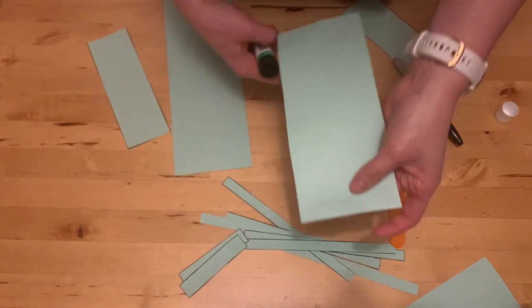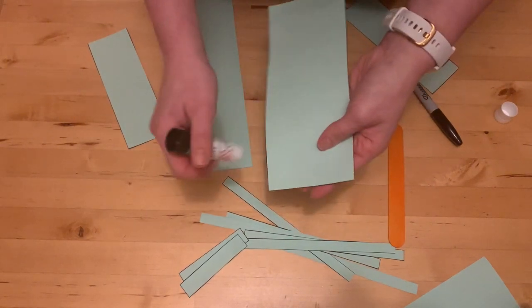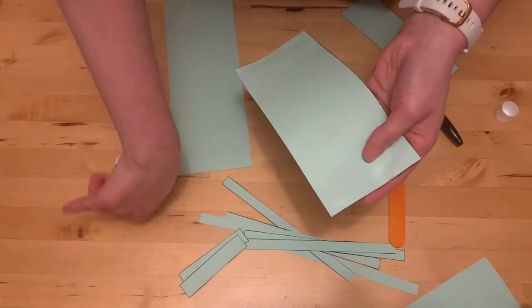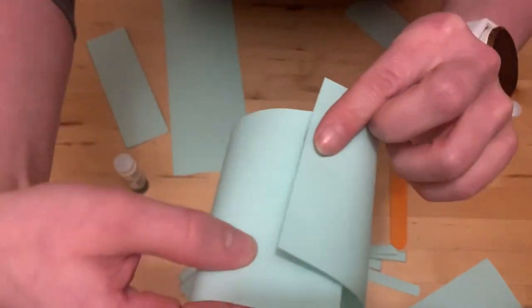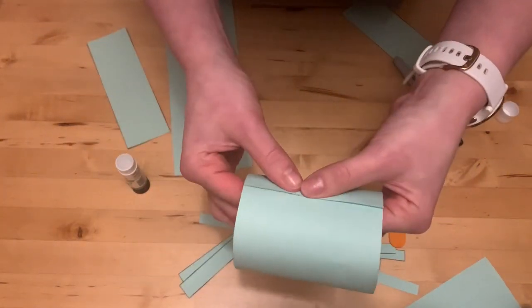So I'm putting my glue on here but also on what I'm sticking down to so that when I roll it together the glue meets up on the paper and I can stick it down.